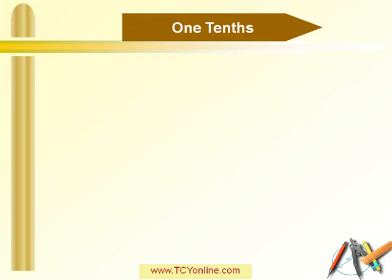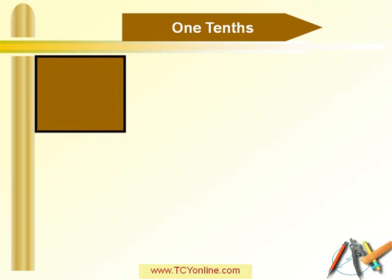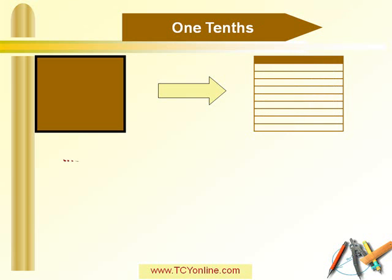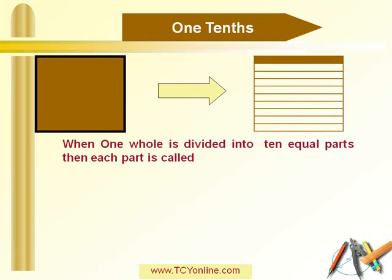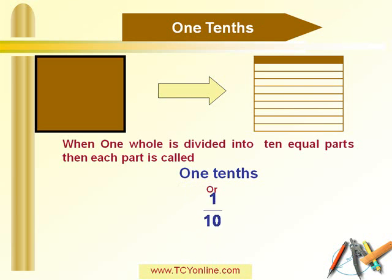Now let's see what 1 tenth is. We know that the complete square represents one whole. Let's divide this complete square into 10 equal parts. Each part represents 1 tenth — that is, 1 out of 10 parts. We can write this as 1 over 10, or in decimal form as 0.1.